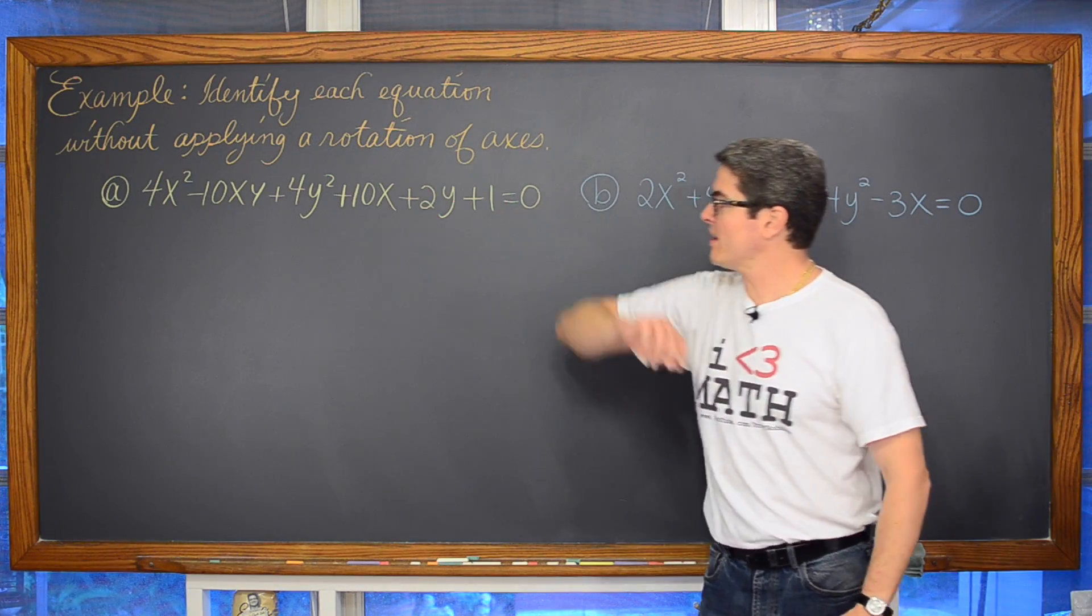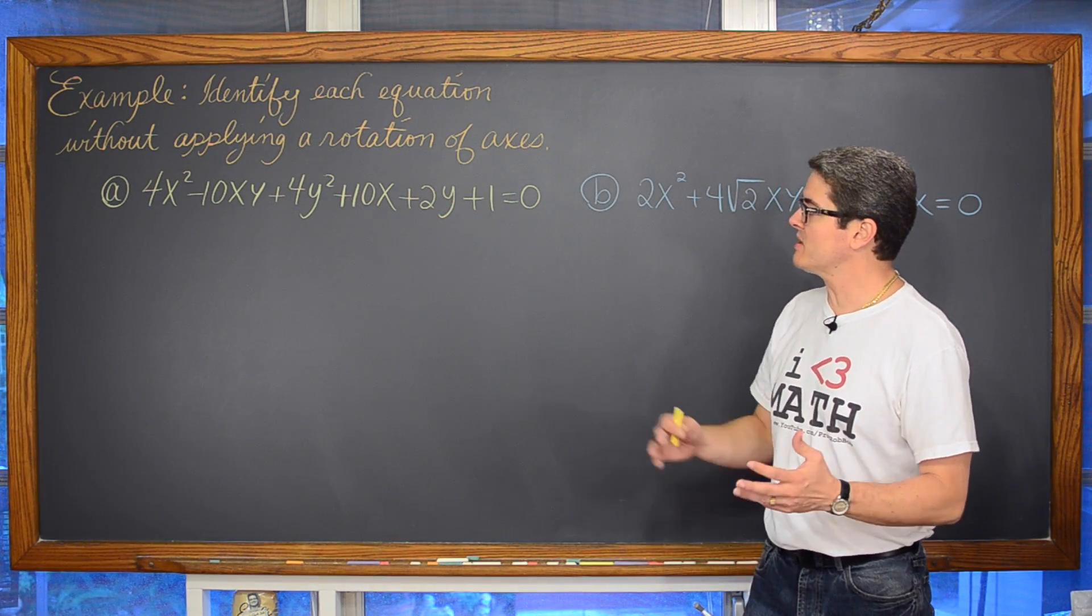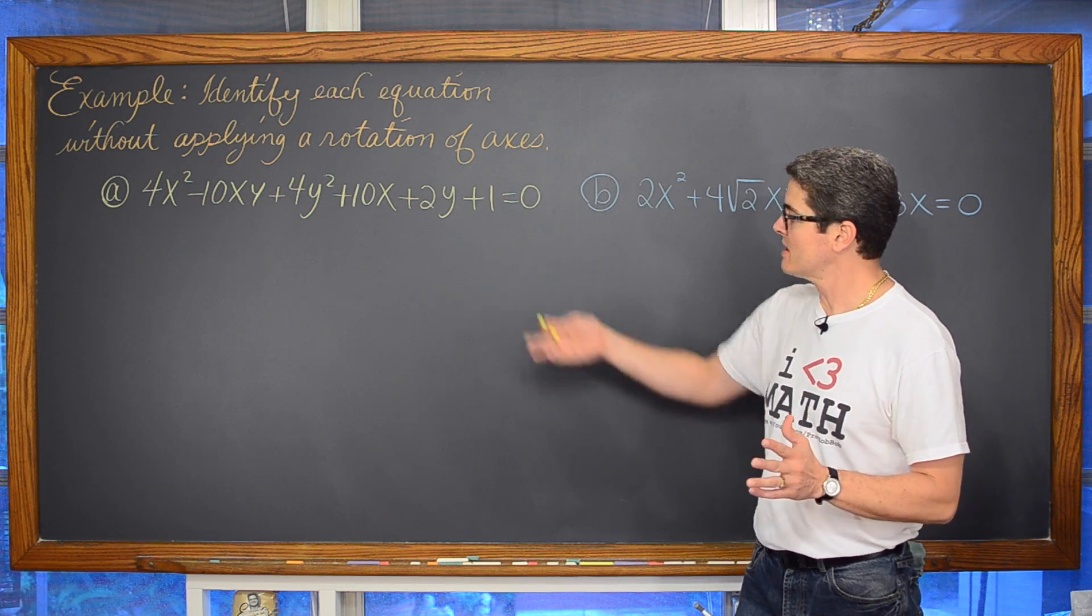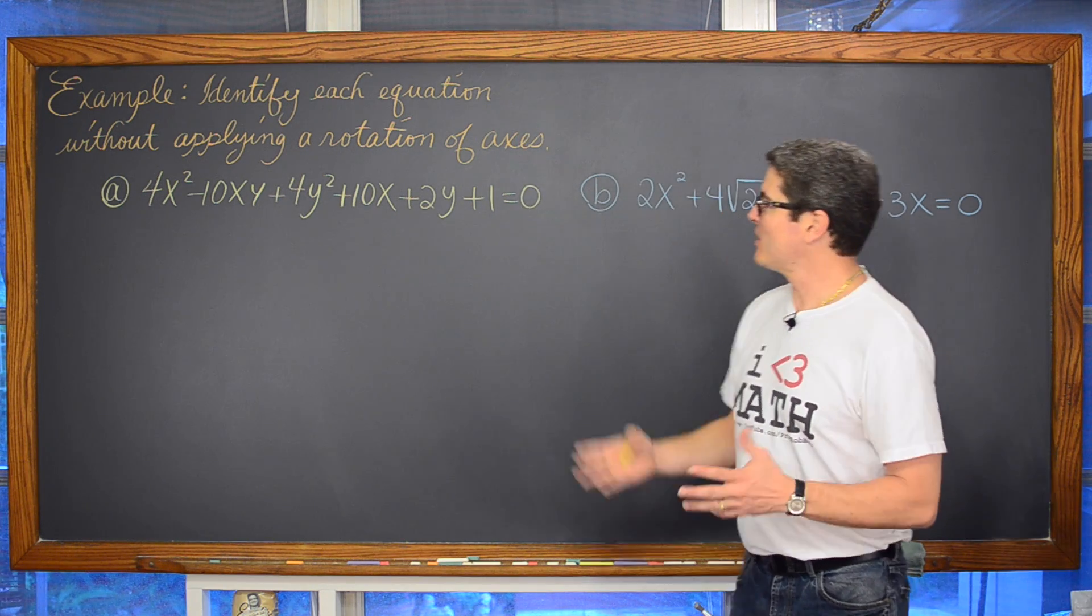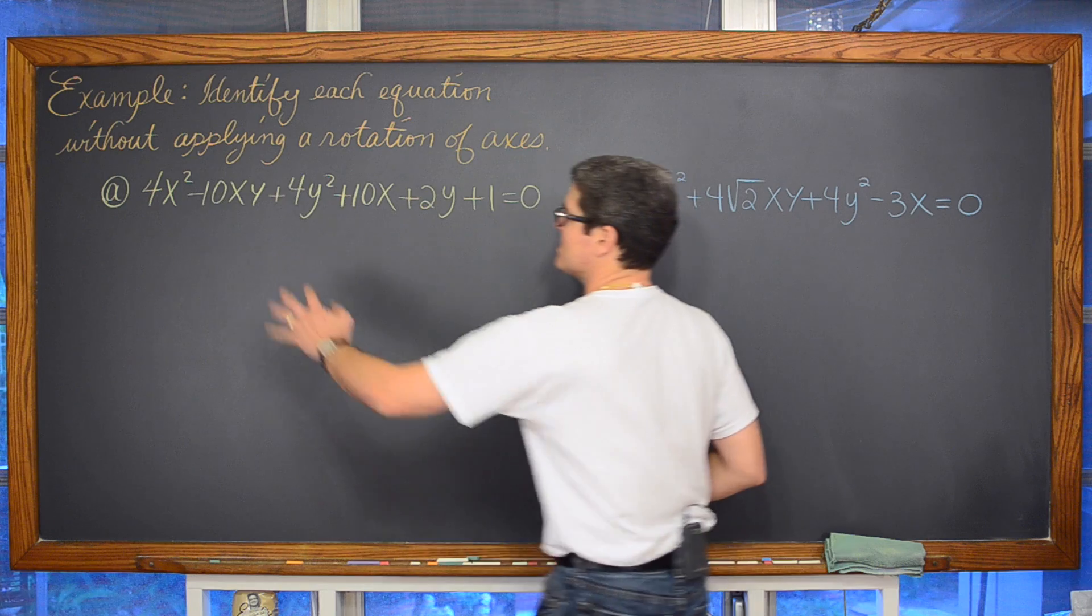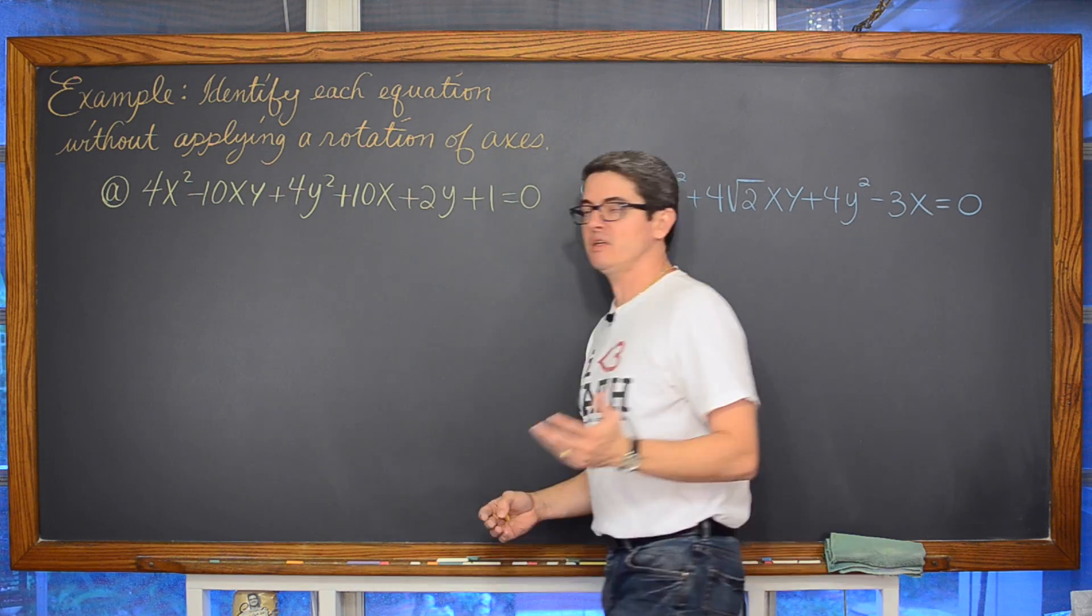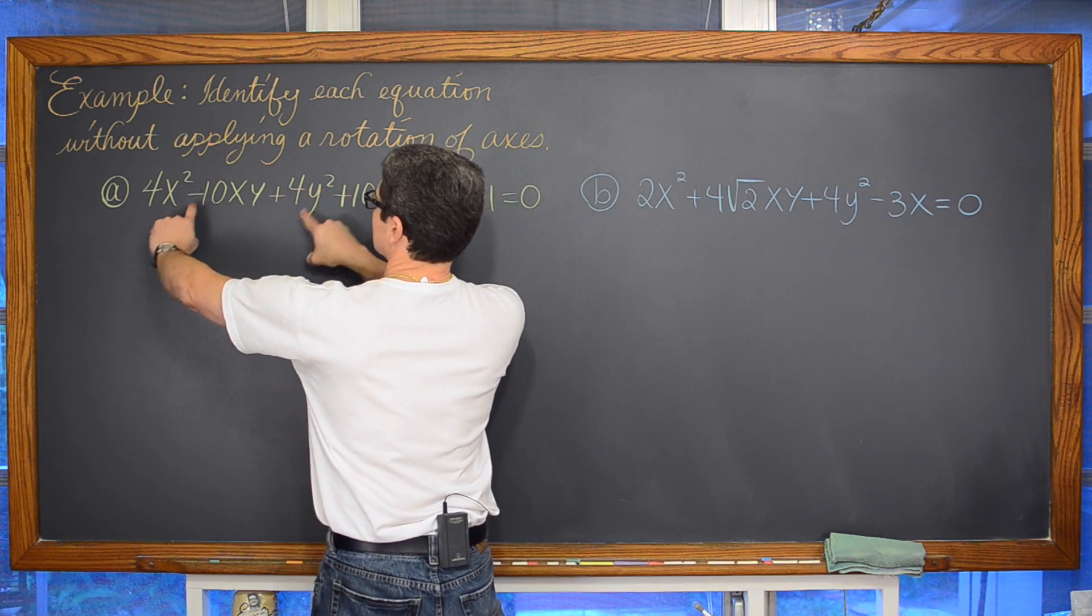We've got 4x squared minus 10xy plus 4y squared plus 10x plus 2y plus 1 is equal to zero. And if there was no xy term, I would look at that and go hey, there's two squared terms.